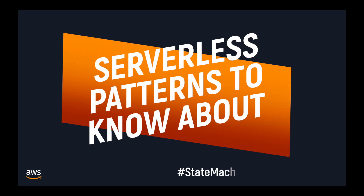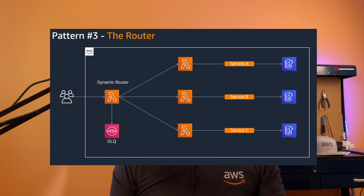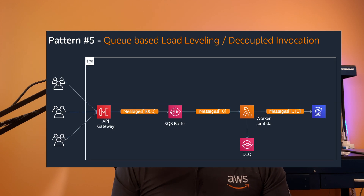Welcome to the series about design patterns and how to implement them on AWS using only serverless services. If you haven't checked the first episode, make sure to give it a view. We talked about the strangler, the circuit breaker, the router, distributed trigger, and the decoupled invocation. In this episode, we have three new patterns to cover, so let's get to it.